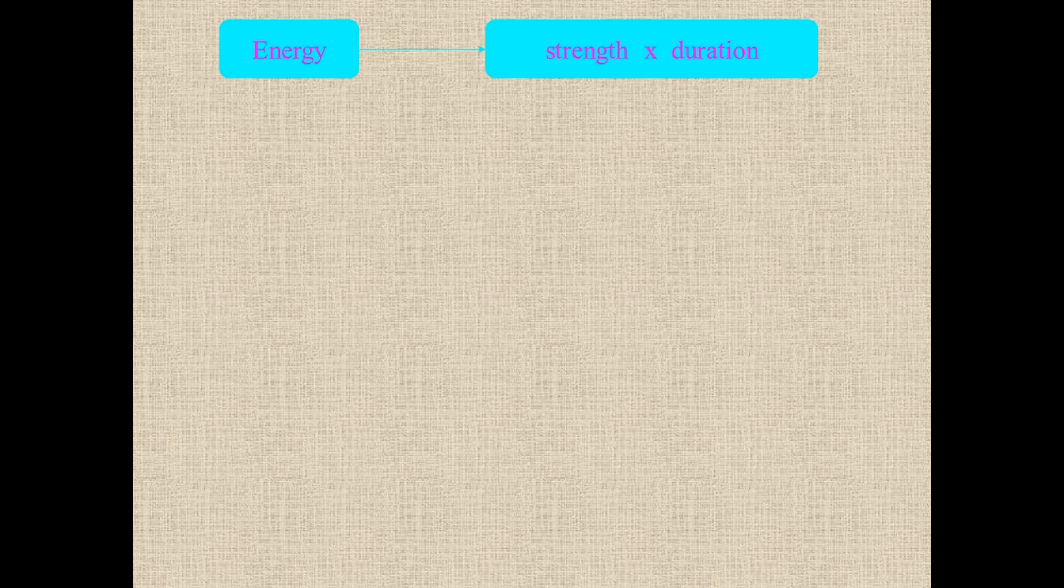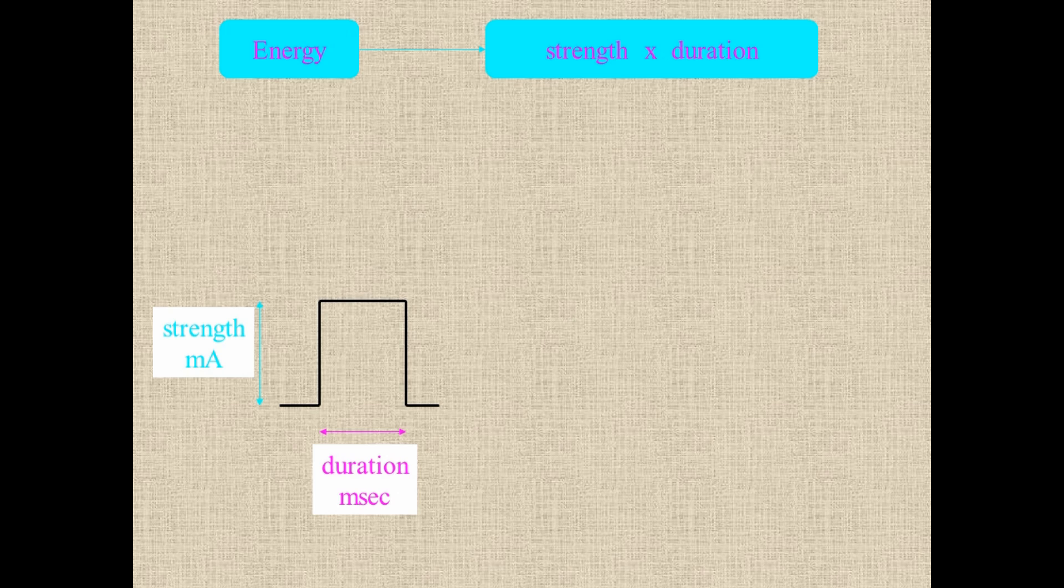So energy comes with two components, strength and duration. So much current for so much time equals your energy. It's the area under the curve. And there are a number of ways you can stimulate a nerve. So this is square wave pulse, which is what comes out of your boxes. So you've got a certain duration of milliseconds and a certain strength in terms of milliamps. And the area under the curve is the total amount of energy that you're delivering.